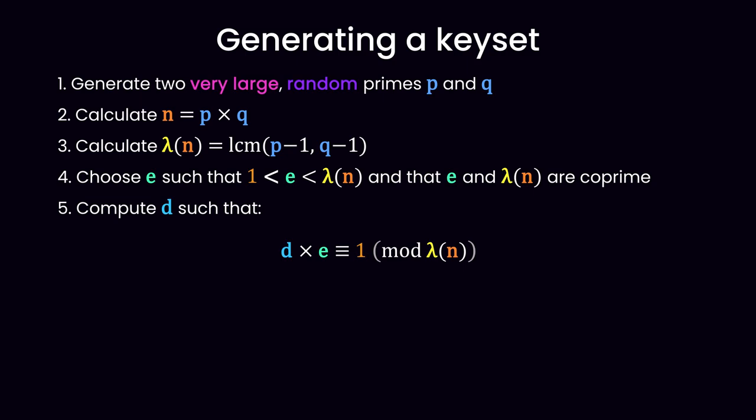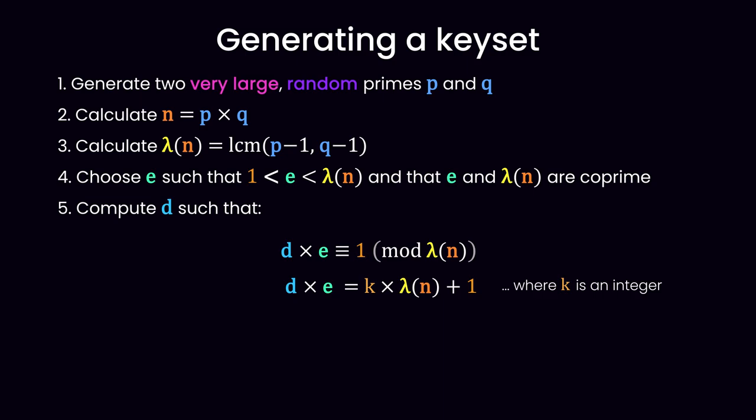To do that, we can use a property of modular congruence which states that our equation is equivalent to this one, where K is an integer. Now, because E and lambda of N are co-prime, this equation is actually a form of Bézout's identity, which means there always is a solution, and we can compute it using the extended Euclidean algorithm. Feel free to look that up if you're interested.